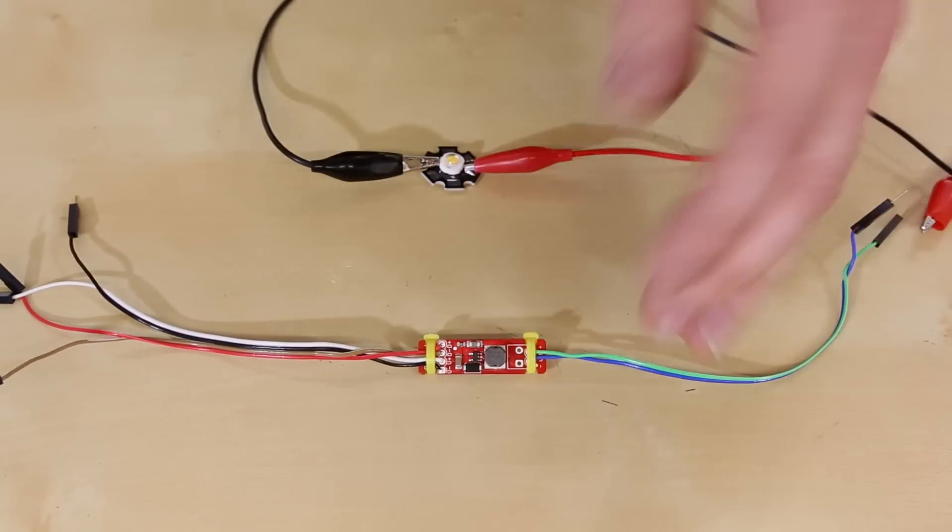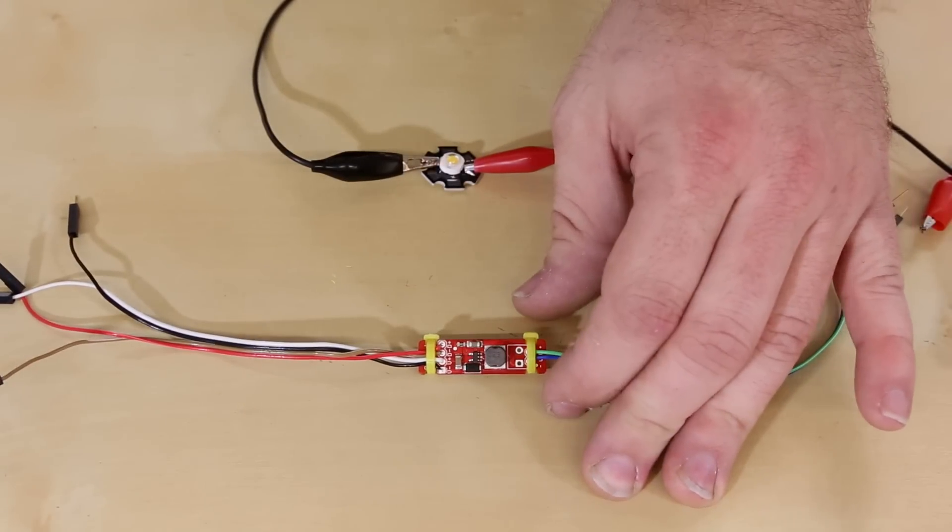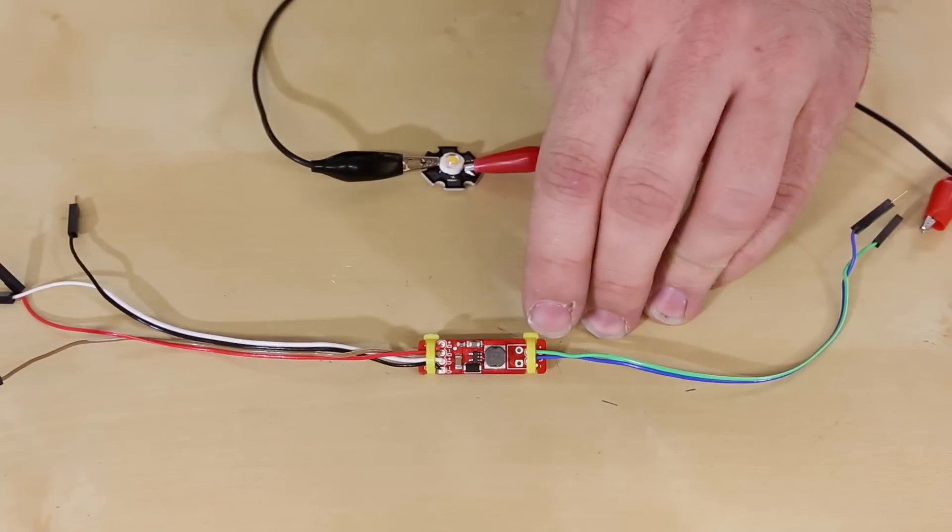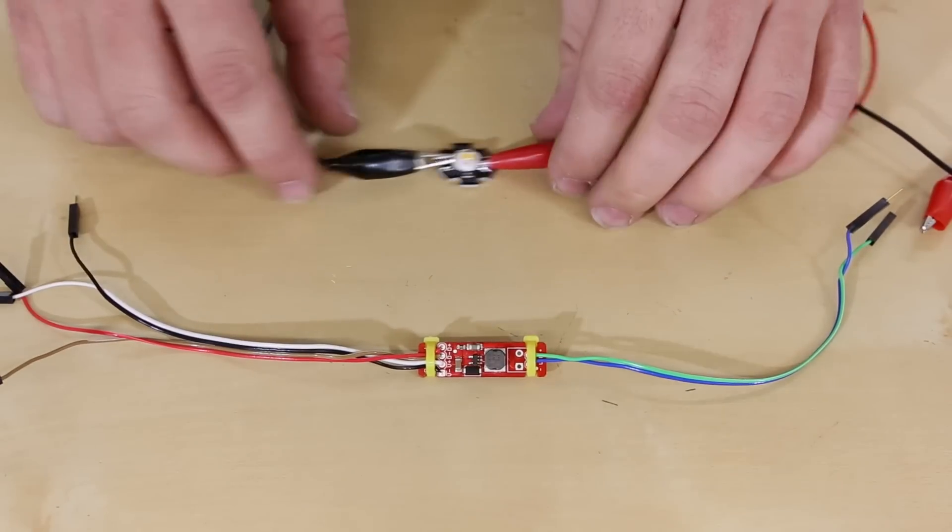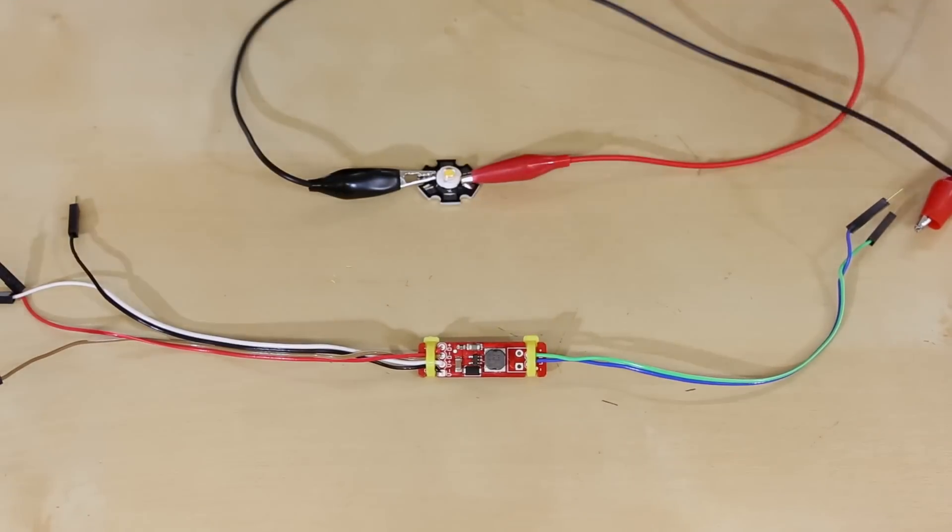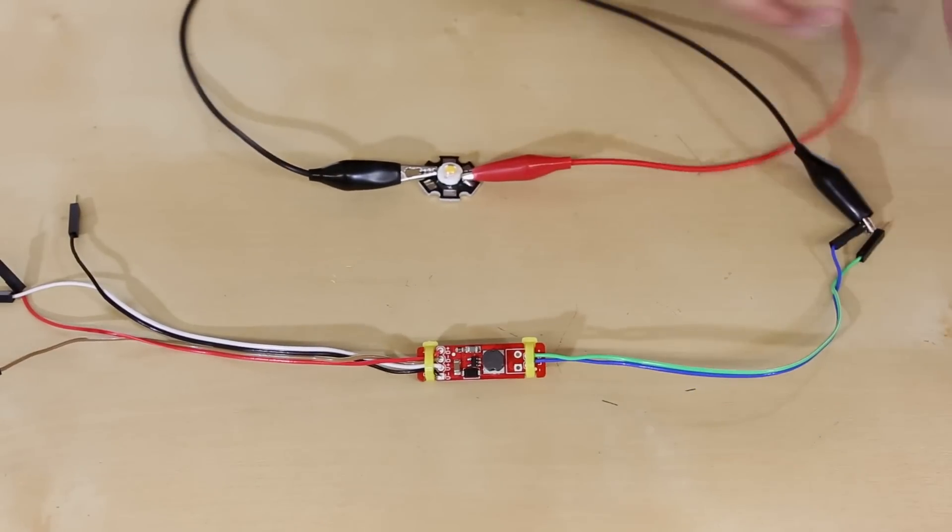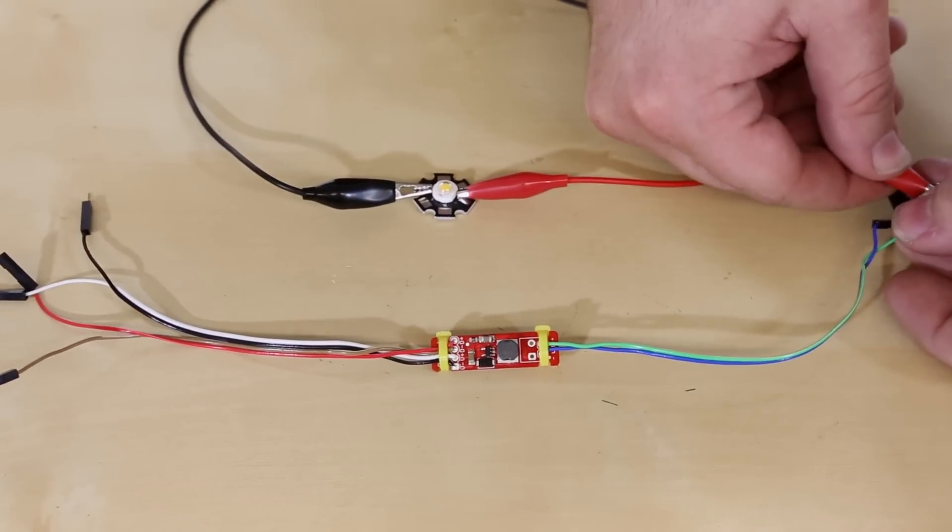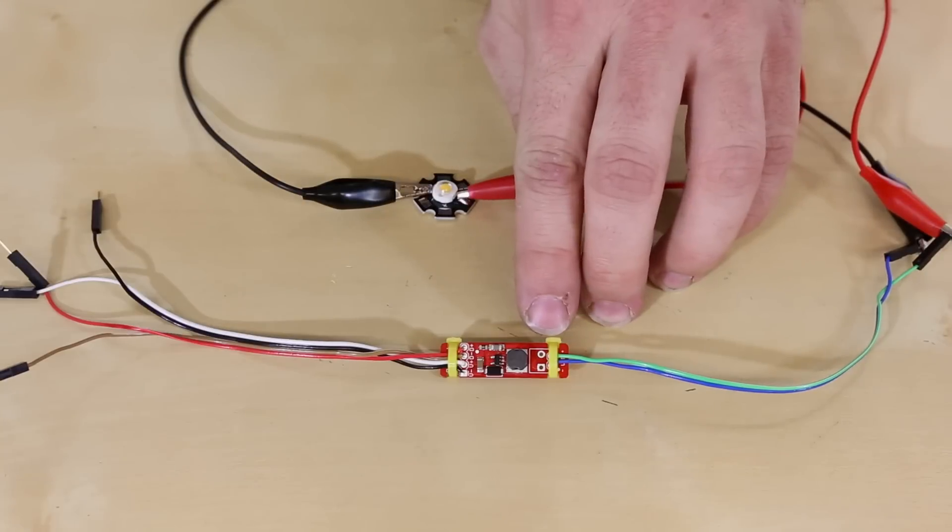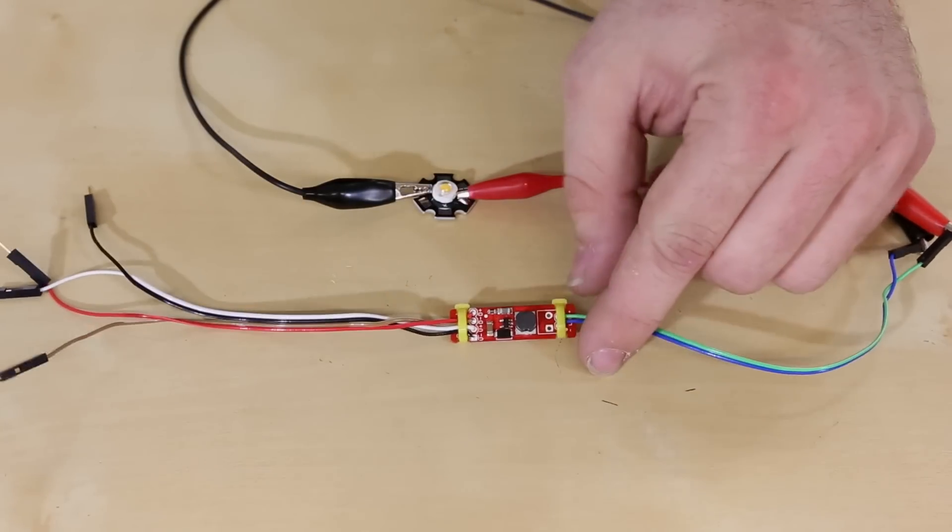Getting the FemtoBuck up and running is actually pretty simple. All you have to do is connect it to an LED using this output right here and I'm going to connect it to one of our soft white 3 watt LEDs. And I'm just using alligator clips to connect to these jumper wires which I've soldered to the LED connection which is the output on the FemtoBuck.